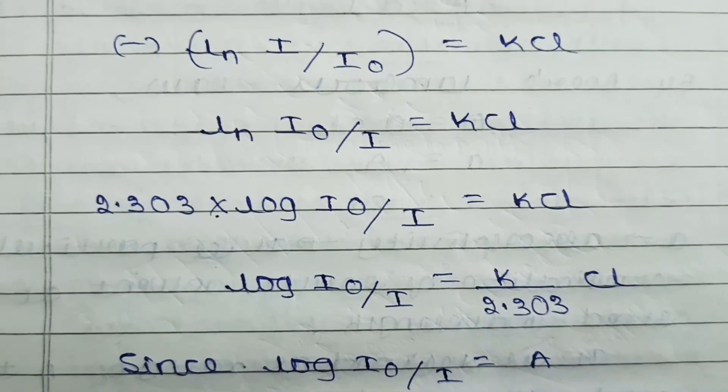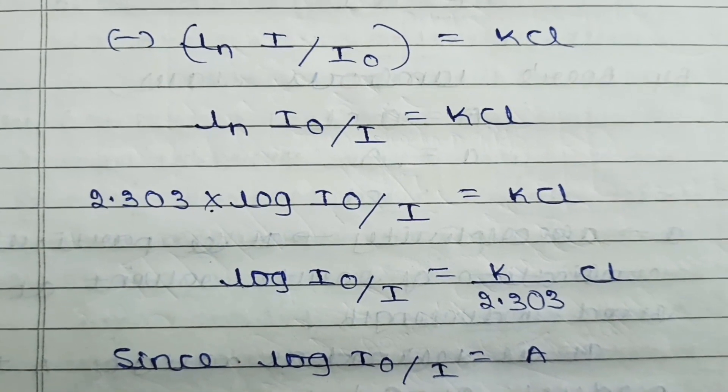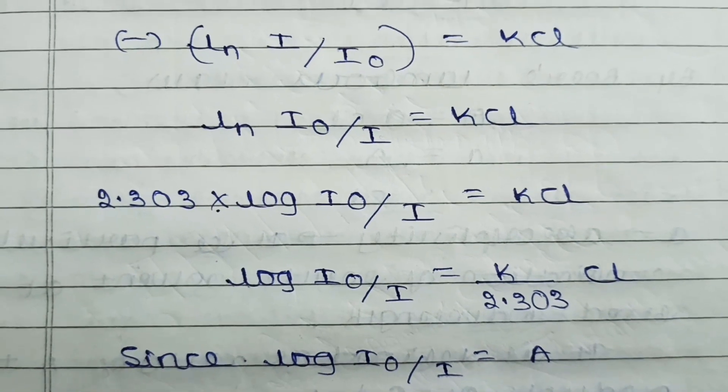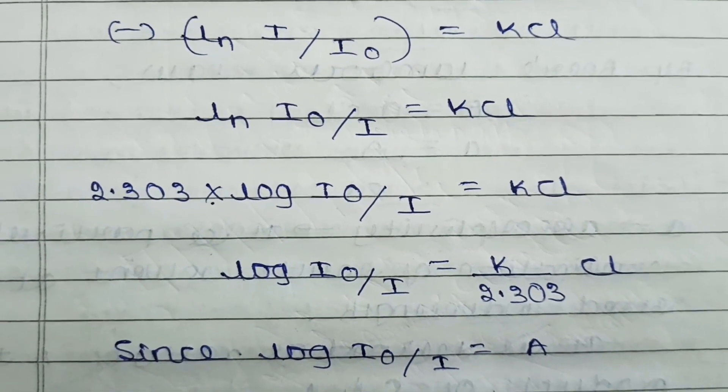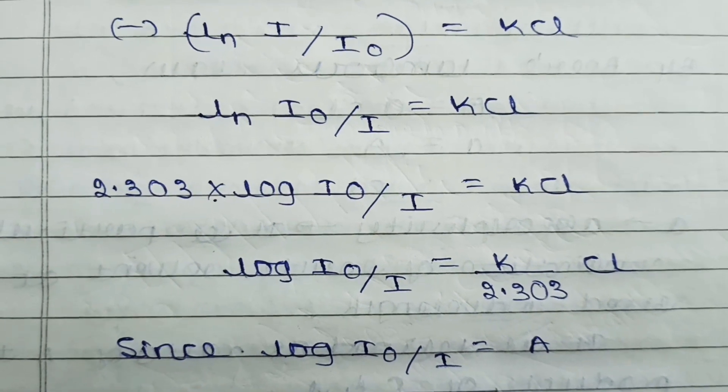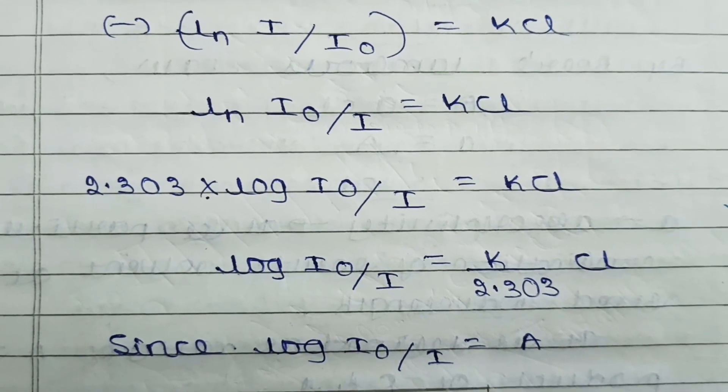In the next step, for removing the negative sign, Ln I by I₀ becomes I₀ by I. Because we changed the sign, the equation becomes numerator goes to denominator and denominator goes to numerator, equals KCL.